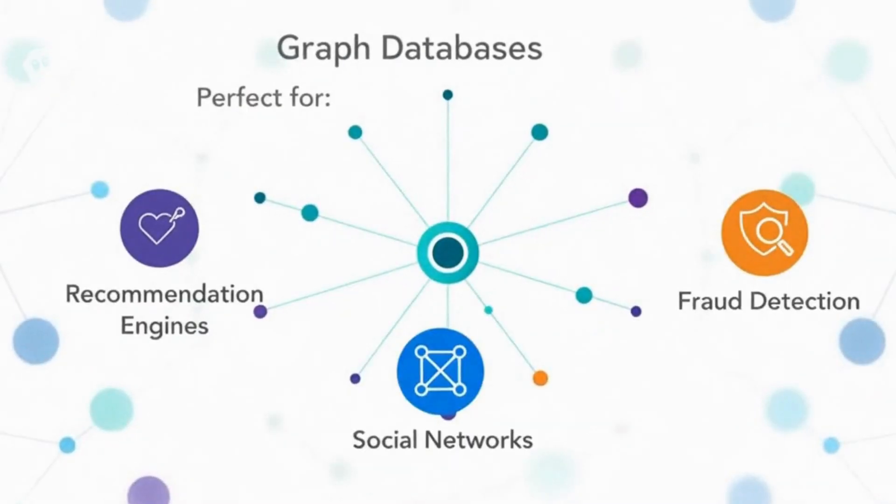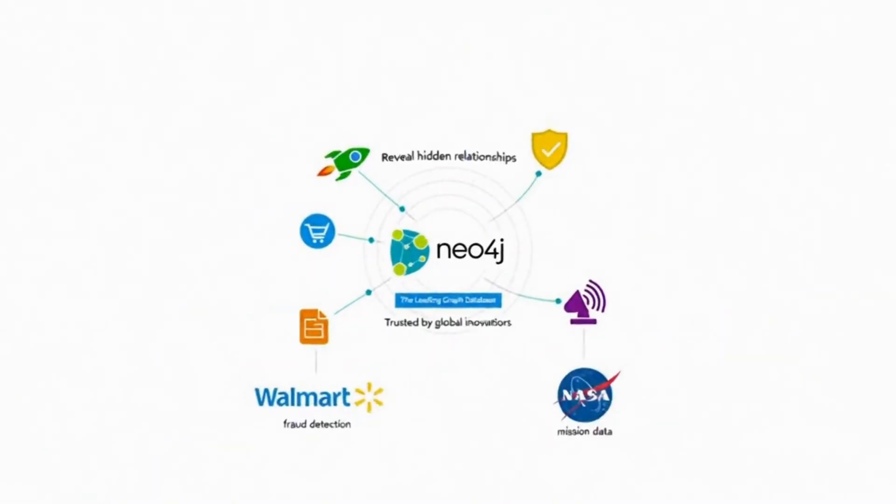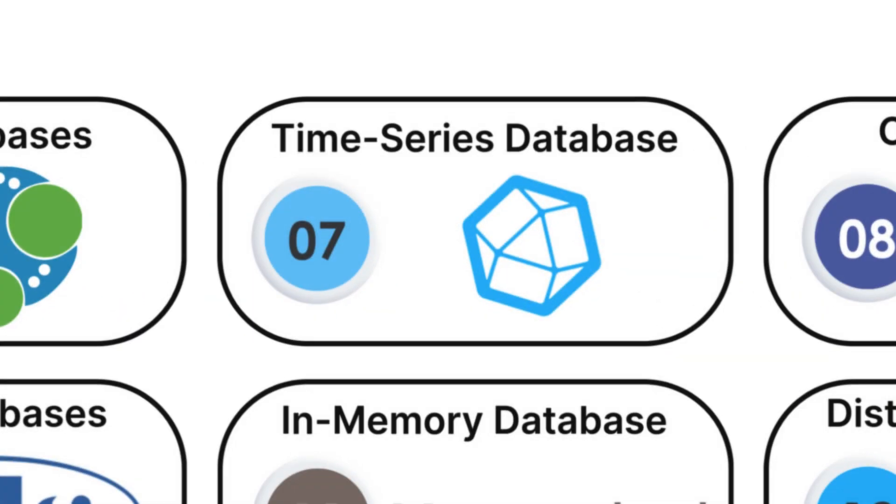This makes them perfect for recommendation engines, fraud detection, and social networks. Neo4j is the leading graph database, used by companies like Walmart to detect fraud, and by NASA to manage complex data about space missions.